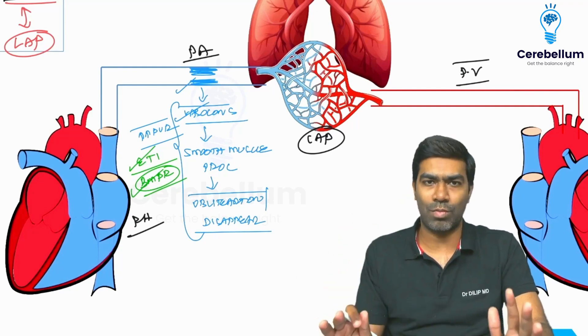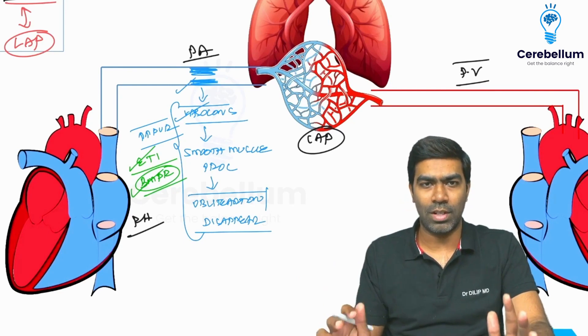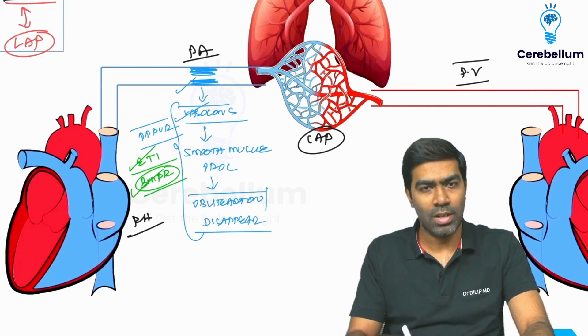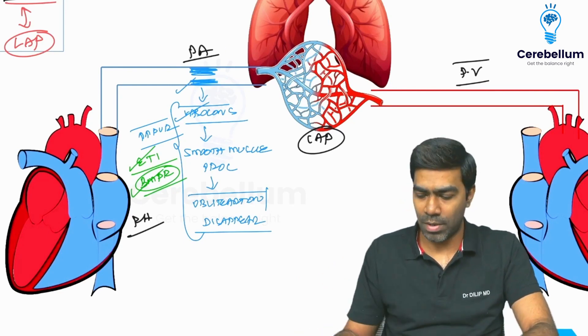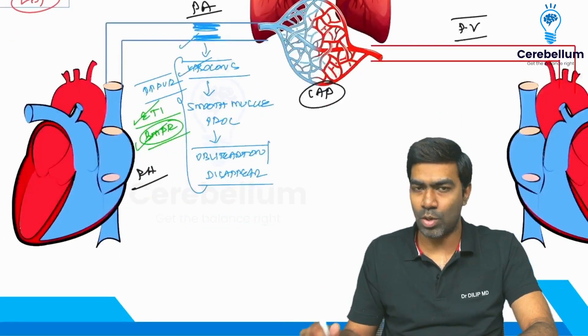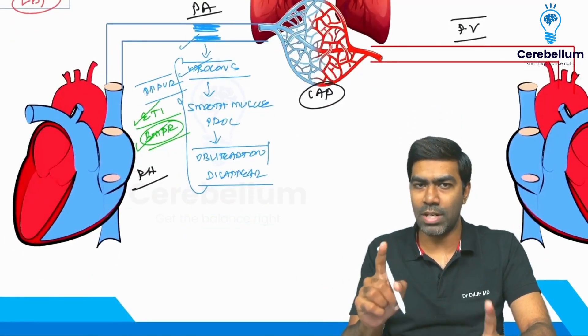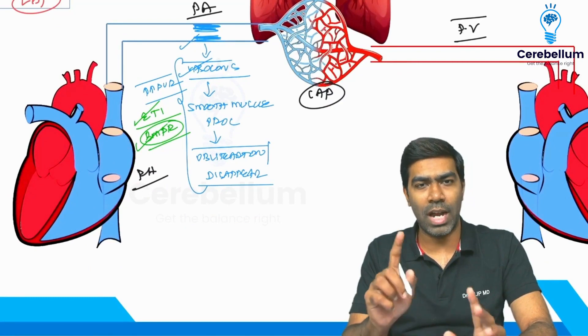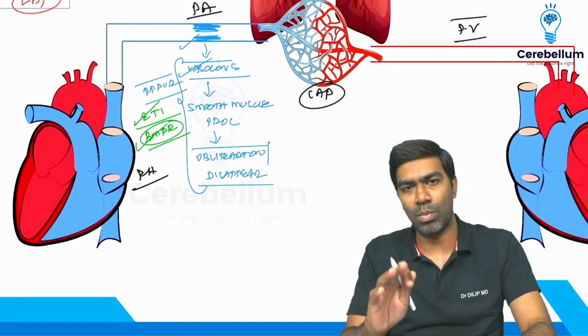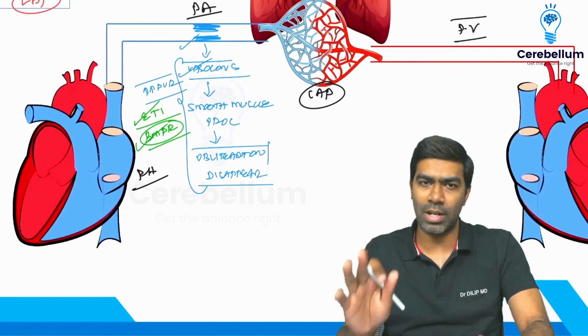There are tons of molecules involved in type 1 pulmonary artery hypertension, but two are most important: endothelin-1 and BMPR — bone morphogenic protein receptor.